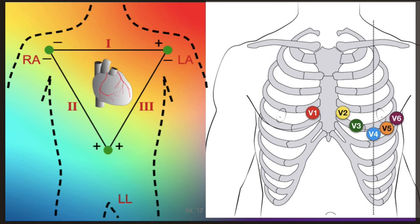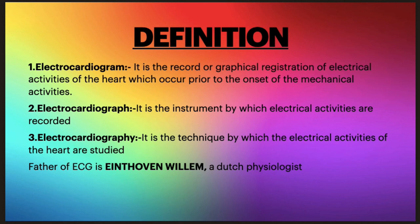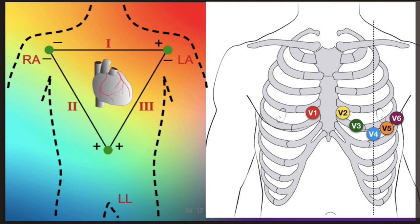This covers the basics of ECG. Today I have taught you about the leads, the ECG paper, the uses of ECG, the definitions of the three key terms, and the six chest lead positions. In the next part I will cover the waves of ECG — P, Q, R, S, and T. Stay tuned, and if you haven't checked my vlogs, do check them out and subscribe to my channel.